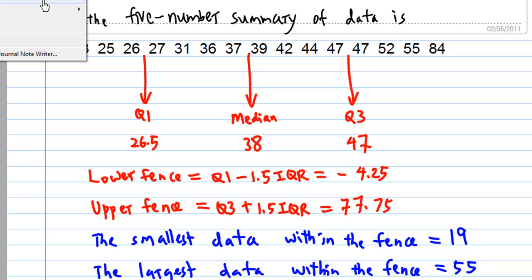These are the five number summary. So the five numbers are: 19, Q1 which is 26.5, the median 38, Q3 which is 47, and 55. This five number is the five number summary of the data, the smallest data within the fence. So once we got the five number summary, we are able to construct the box plot.